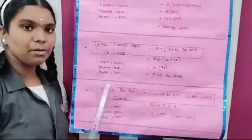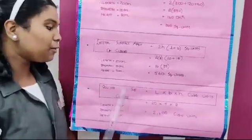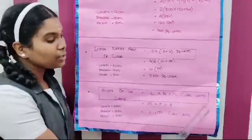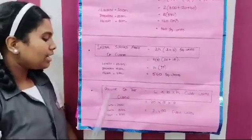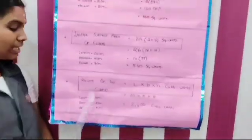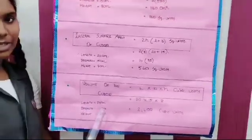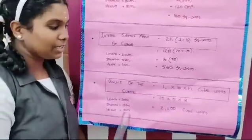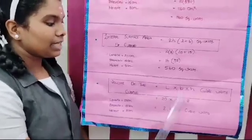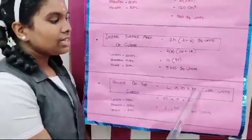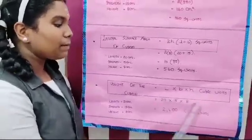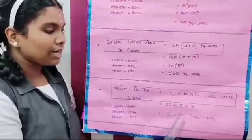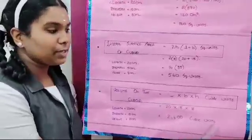Next, we calculate the volume of the cuboid. Volume of the cuboid is equal to length × breadth × height cubic units. Here, length is 20 cm, breadth is 15 cm and height is 8 cm. By multiplying these three values, we get 2400 cubic units.